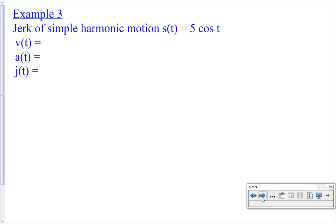Jerk of simple harmonic motion. Five cosine of t. Harmonic means this is over and over and over again, right? That's what harmonic means.